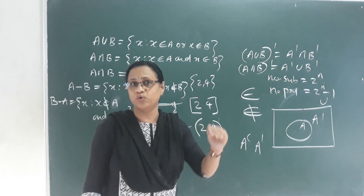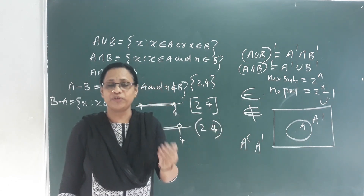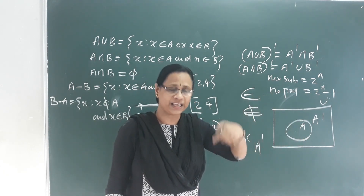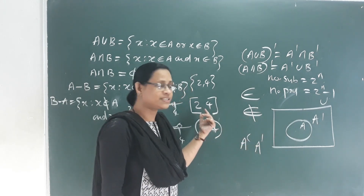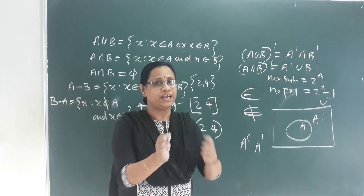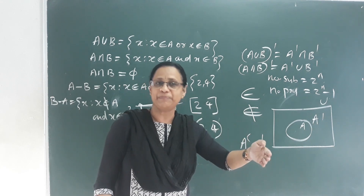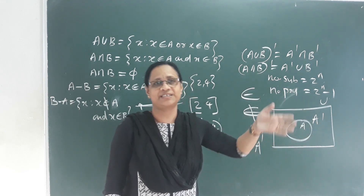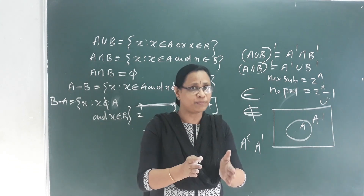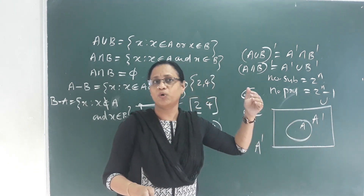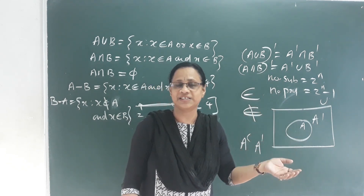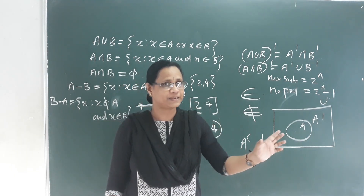The last topic is practical problems on union and intersection. The formula is: the number of A union B equals the number of A plus the number of B minus the number of A intersection B. For three sets, the number of A union B union C equals the number of A plus the number of B plus the number of C, minus the number of A intersection B, minus the number of B intersection C, minus the number of A intersection C, plus the number of A intersection B intersection C.